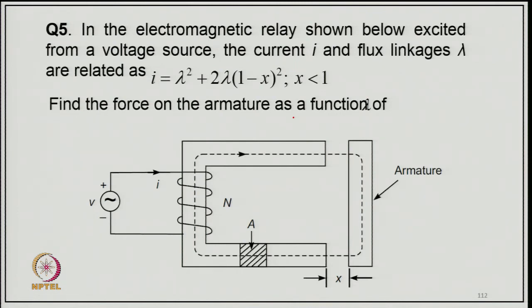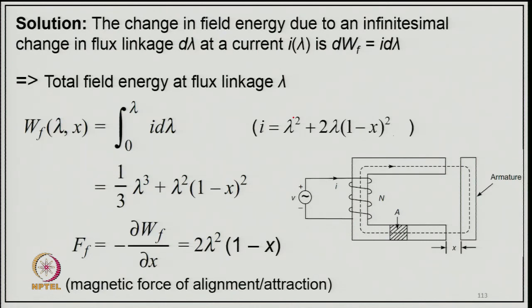Example 5: In an electromagnetic relay excited from a voltage source, current i and flux linkage λ are related by i = λ² + 2λ(1 − x²), where x < 1. Find the force on the armature as a function of λ. Solution: The change in field energy due to an infinitesimally small change in flux linkage dλ at current i is dW_f = i·dλ. Total field energy: W_f = ∫₀^λ i·dλ = ∫₀^λ (λ² + 2λ(1 − x²))·dλ = ⅓λ³ + λ²(1 − x²). Force: F = −∂W_f/∂x = 2λ²·x — this is the magnetic force of attraction.